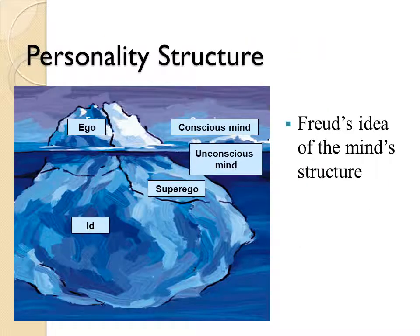Freud divided the mind into two structures: the unconscious mind and the conscious mind. The unconscious mind is the larger part, which does not appear in personality and cannot be accessed. The smaller part is the conscious mind. In addition, Freud proposed three components: the Id, the Superego, and the Ego.